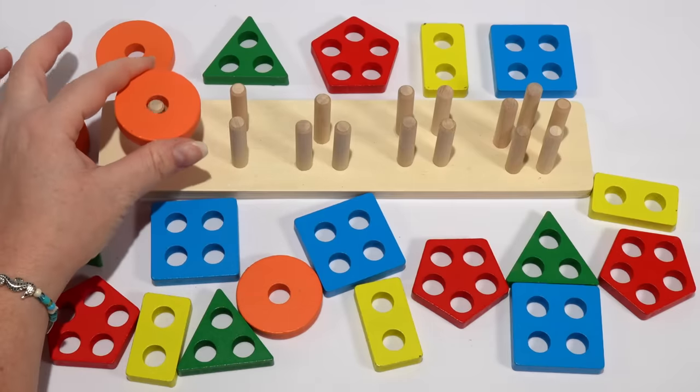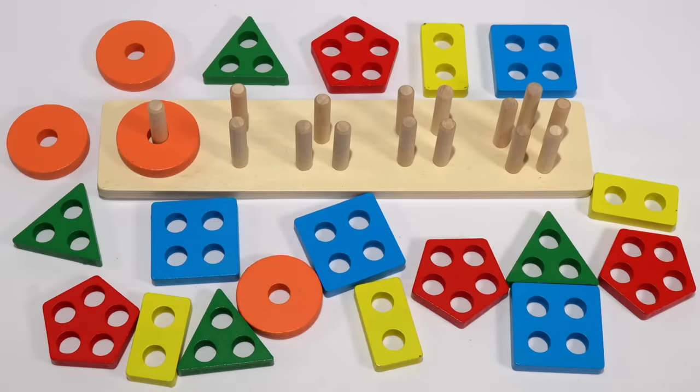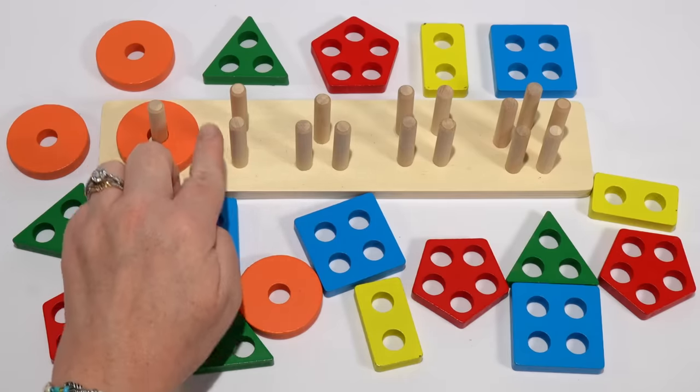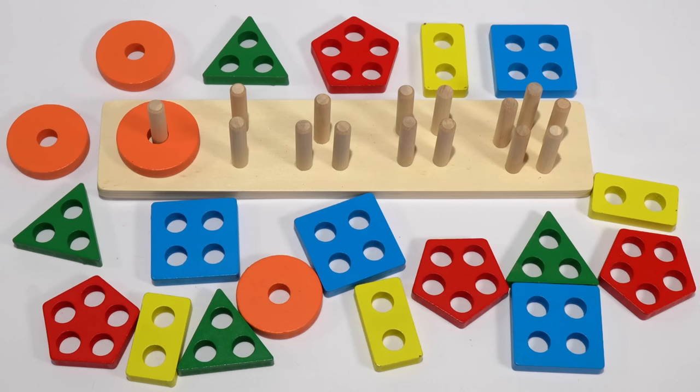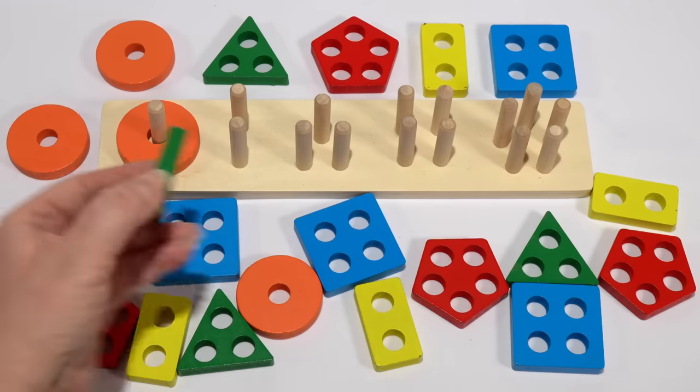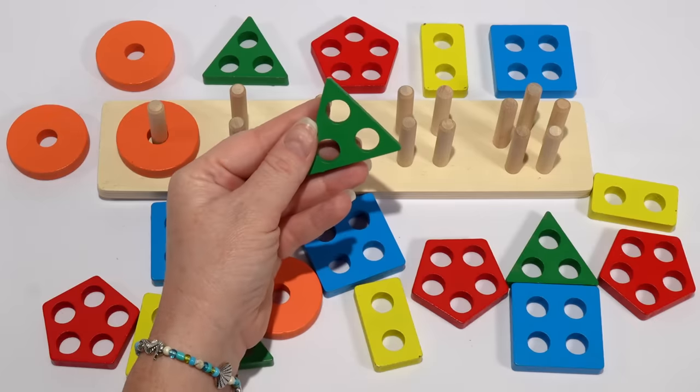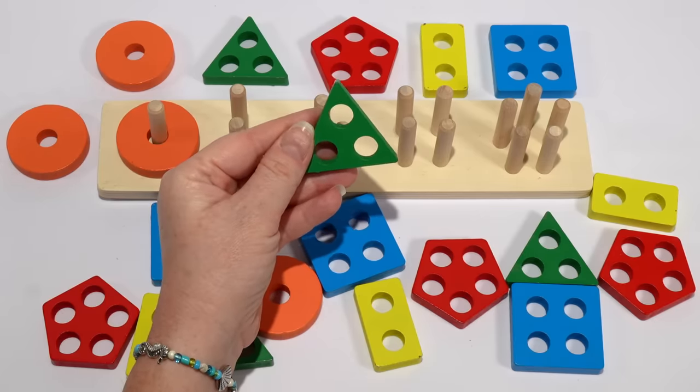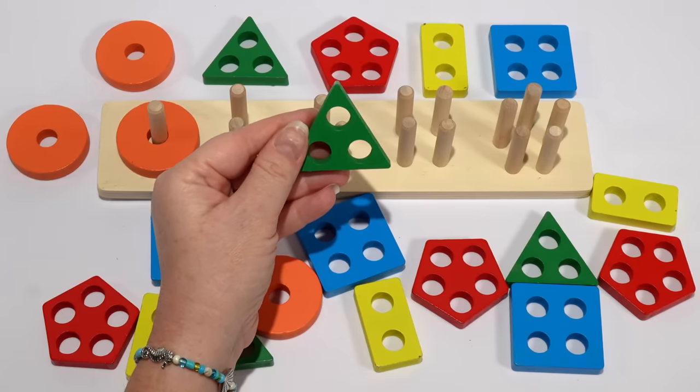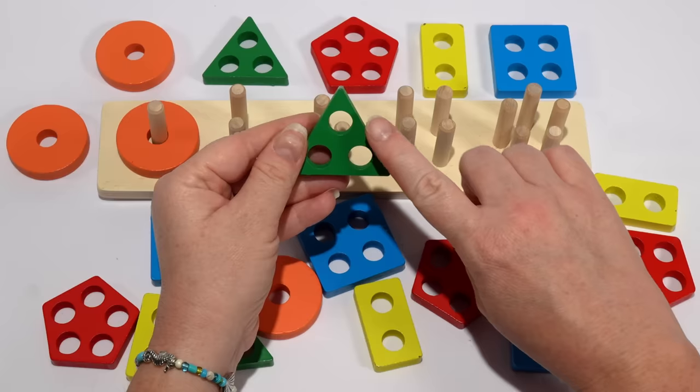So we'll put our circle on the peg and our next set has one, two pegs. So we have to find a shape that has just two holes. Does our triangle have only two holes? No, that's right, our triangle has three holes.